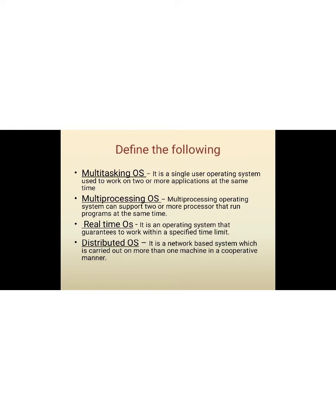Let's move to define the following. First, multitasking operating system. It is a single user operating system used to work on two or more applications at the same time. Second, multiprocessing operating system. Multiprocessing operating system can support two or more processors that run programs at the same time.